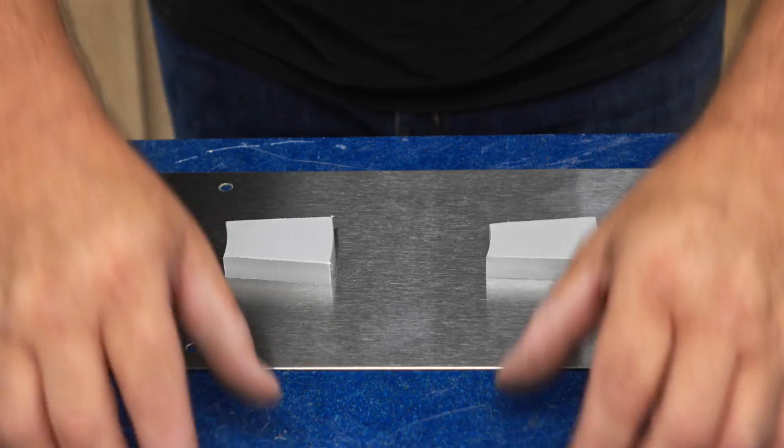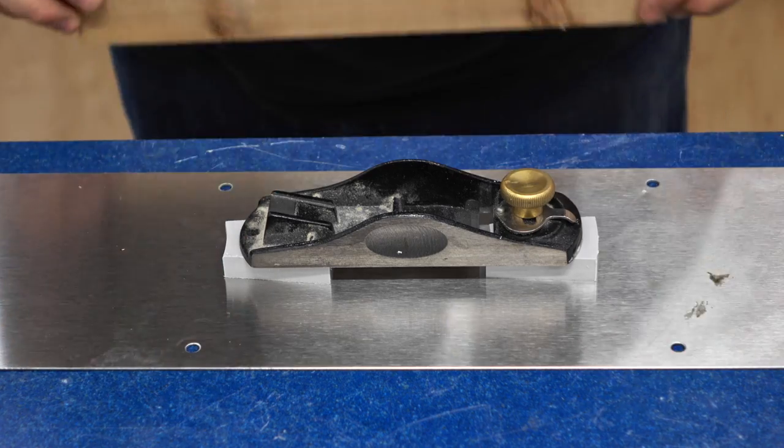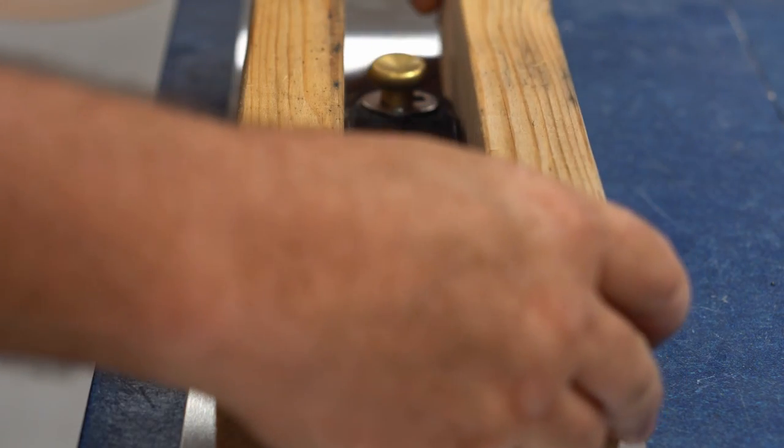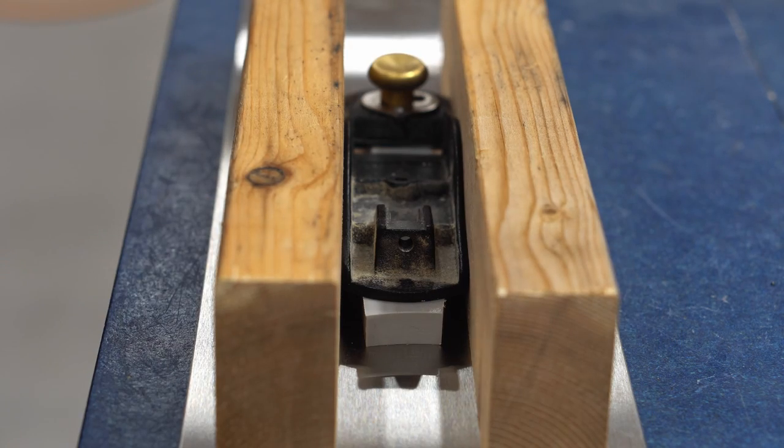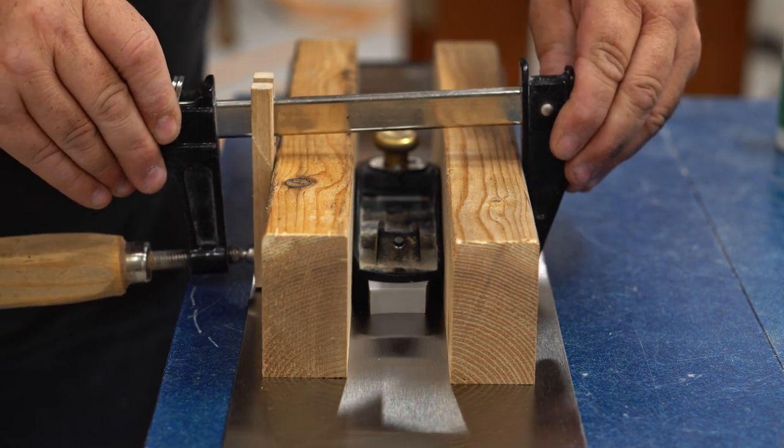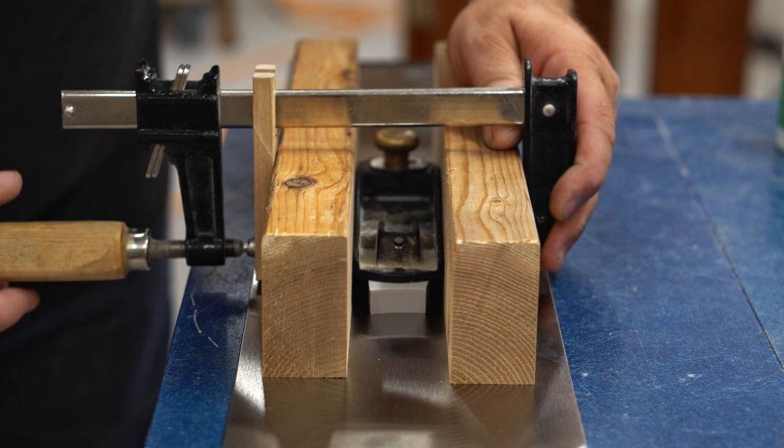Now we're going to move on to the tricky part and that's actually removing some material from the base of the plane. The stainless steel I'm using is 1/16th of an inch thick, and really I should remove that much from the base of the plane as well, but I know that I won't be able to go that deep because there are parts of this plane that are very thin.